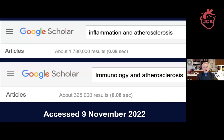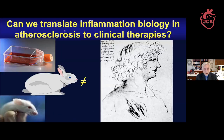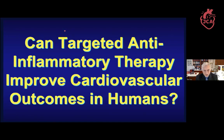This is the pivot point in the talk. Google Scholar returns 1.8 million results when you cross inflammation and atherosclerosis, and over 300,000 for immunology and atherosclerosis. There is a tremendous amount of experimental literature and biomarker data in humans, but how do we cross the valley of death into actual clinical events? I have devoted much of the last 15 to 20 years to moving from the test tube and animal lab into the clinic, testing the hypothesis that targeted anti-inflammatory therapy can improve cardiovascular outcomes in humans.